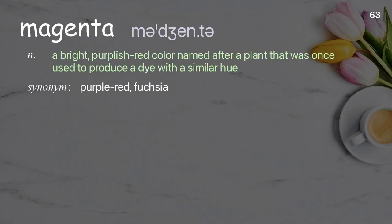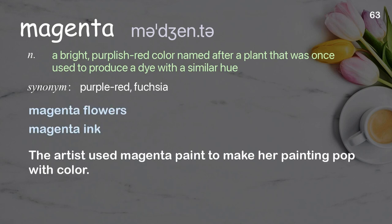Magenta: A bright, purplish-red color named after a plant that was once used to produce a dye with a similar hue. Examples: Magenta flowers. Magenta ink. The artist used magenta paint to make her painting pop with color.